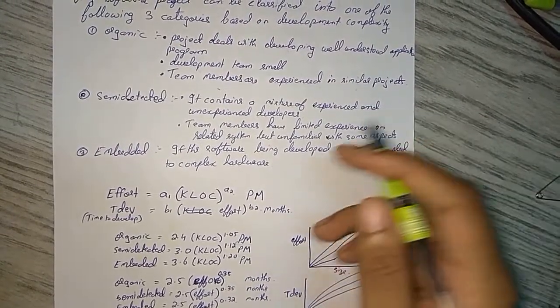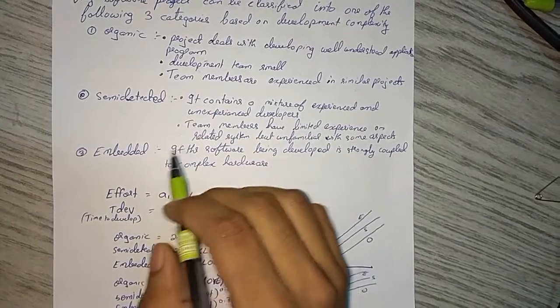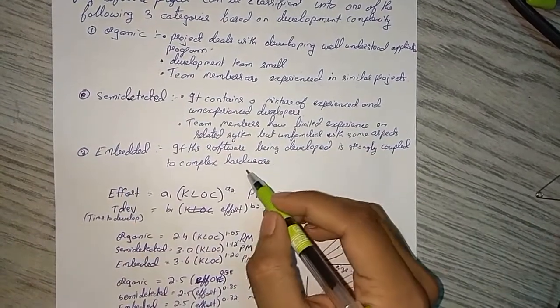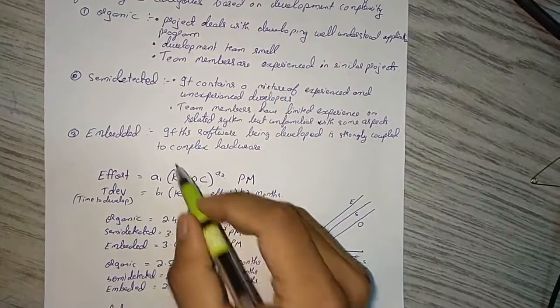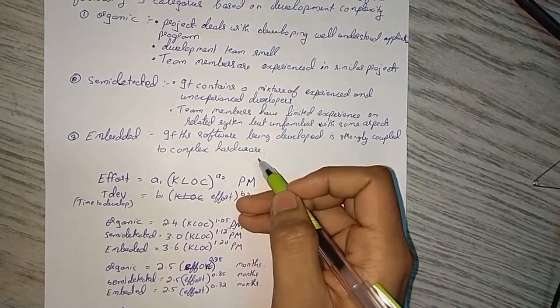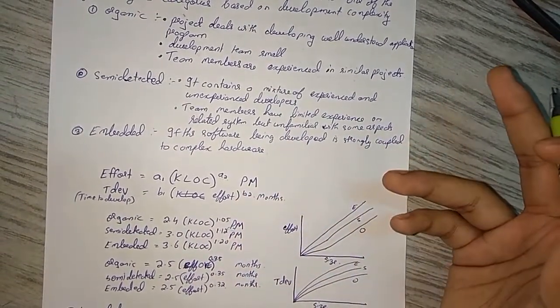Next is embedded. If the software being developed is strongly coupled with complex hardware, that means the software is coupled with the hardware, then we call it as embedded.